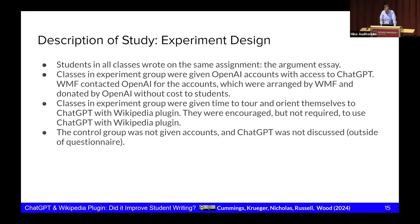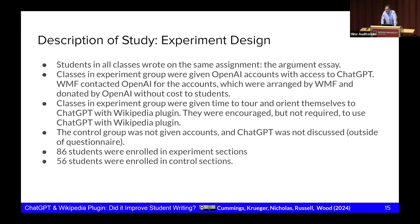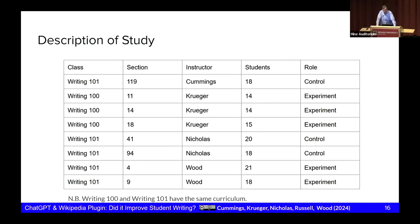The control group was not given accounts, and ChatGPT was not discussed — though that doesn't mean those students could not have gone and used ChatGPT on their own. That's the murky world of education research. We had 86 students in our experiment sections and 56 students in our control sections. We broke control and experiment out to be consistent with teachers — we did not want an instructor to be both in a control group and an experiment group. So if you were teaching in the control, you stayed control for all your sections, and same with experiment.